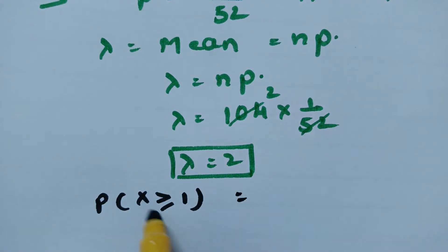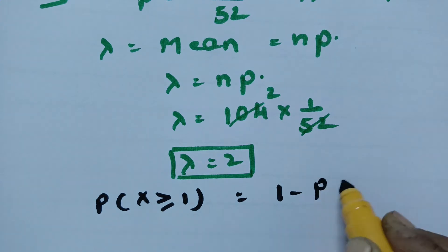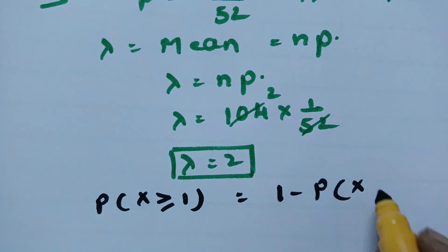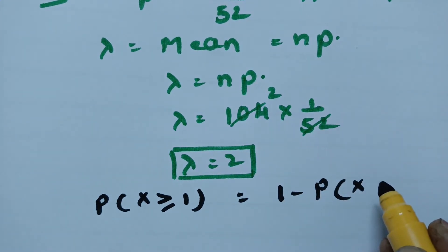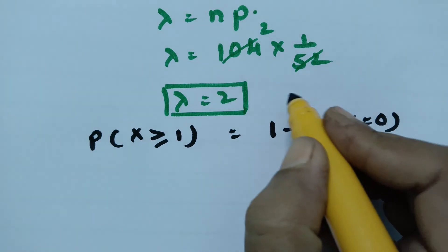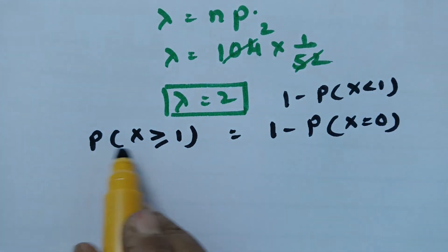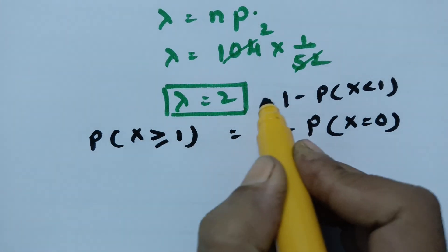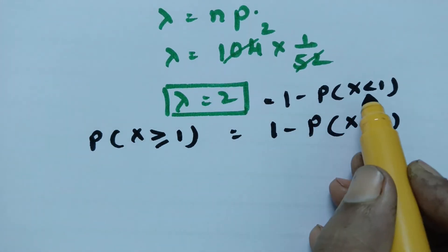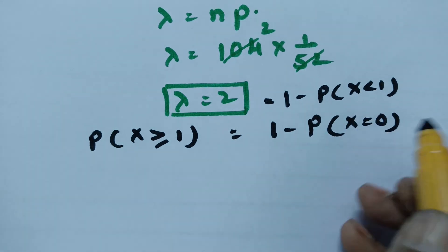Instead of computing directly from 1 all the way up, it is easy to find this as 1 minus the probability of x less than 1. Probability of x greater than or equal to 1 equals 1 minus probability of x less than 1. What is the value which is less than 1? It is equal to 0. So we need 1 minus P(x = 0).